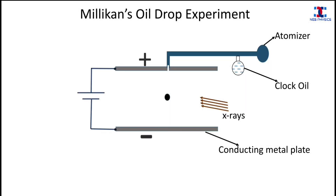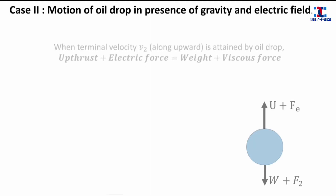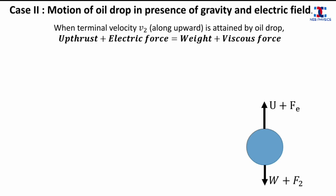Now we move to the second condition, where we observe the motion of the oil drop in the presence of gravity along with an electric field. The electric field is applied such that the upper plate is positively charged. The negatively charged oil drop is attracted by the positively charged plate, so the oil drop starts moving upward and attains a terminal velocity v2. In this case, there are four forces: the upthrust of air and the electric force acting upward, while the weight of the oil drop and the viscous force act downward. So we write: upthrust plus electric force equals weight plus viscous force.